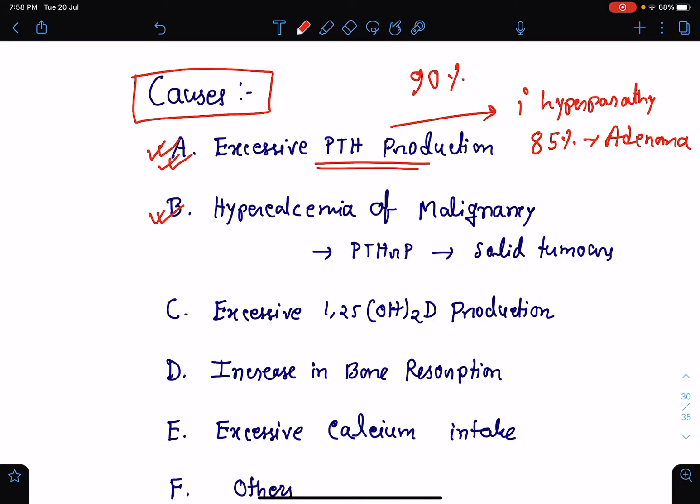If we talk about the hypercalcemia of malignancy, many of the solid tumors will produce something known as PTHRP, parathyroid hormone related peptide. This PTHRP will result in hypercalcemia because it will act on the parathyroid hormone receptors resulting in increased tubular reabsorption of calcium from the kidney as well as resorption of calcium from the bone.